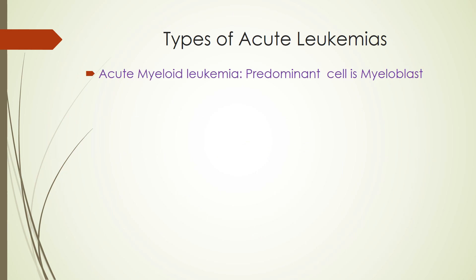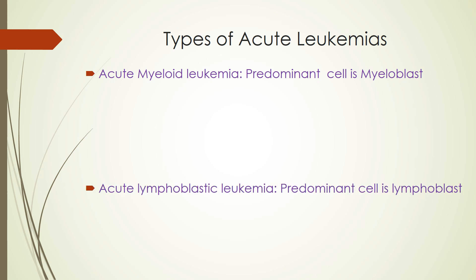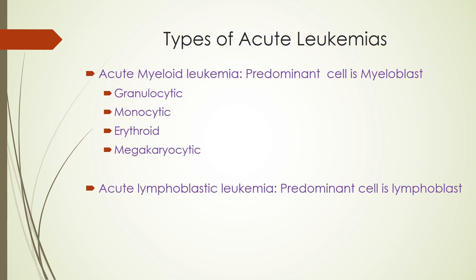Types of acute leukemia: in Acute Myeloid Leukemia (AML), the predominant cell is the myeloblast from the myeloid series. In Acute Lymphoblastic Leukemia (ALL), the predominant cell is the lymphoblast from the lymphoid series. AML may be granulocytic, monocytic, erythroid, or megakaryocytic. ALL is either B-cell type or T-cell type. For AML, the granulocytic series may be neutrophilic, basophilic, or eosinophilic, with corresponding blasts found in the marrow.